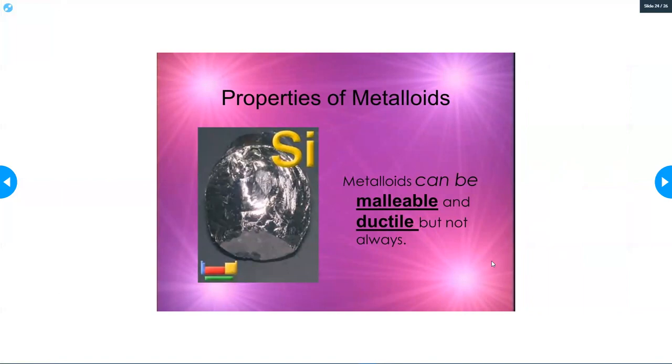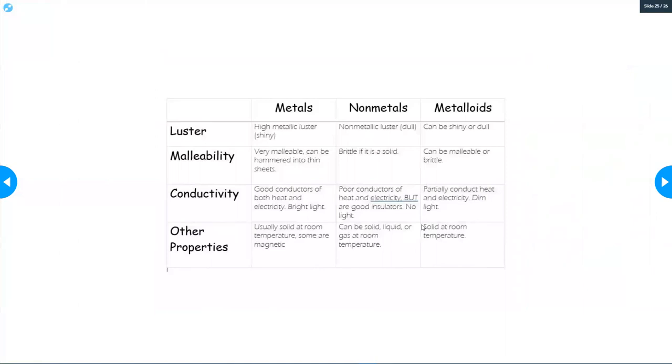Metals can be malleable or ductile, but they're not always. So this table right here is actually going to be your best bet to learn the properties of these. So metals, for luster: metals are shiny. Nonmetals are dull. And metalloids can be either or. Metals are very malleable - they can be hammered into sheets. Nonmetals are brittle - they break. Metalloids can be both malleable or brittle.